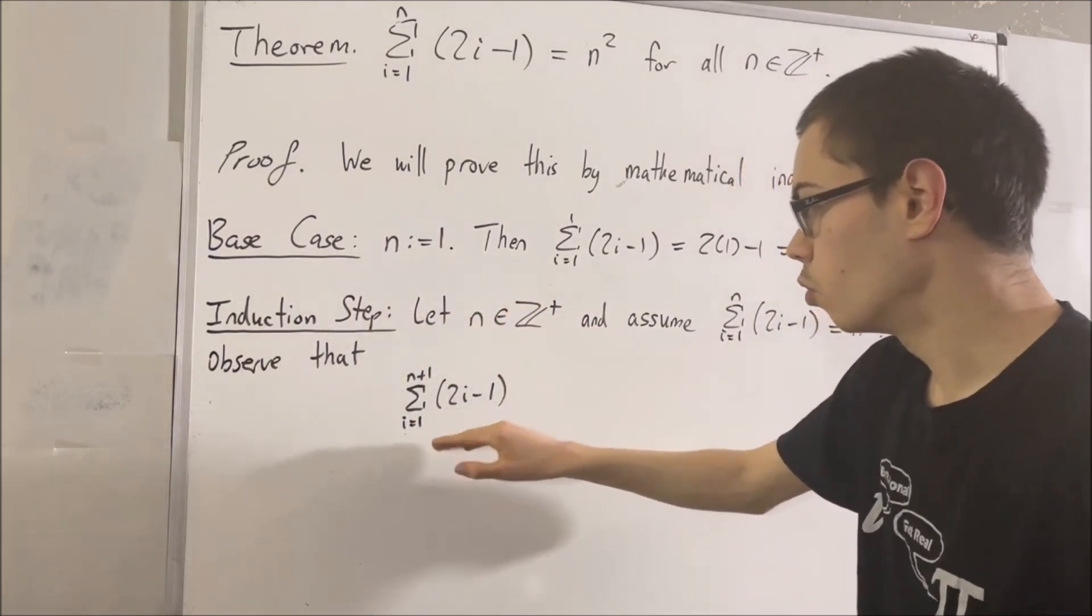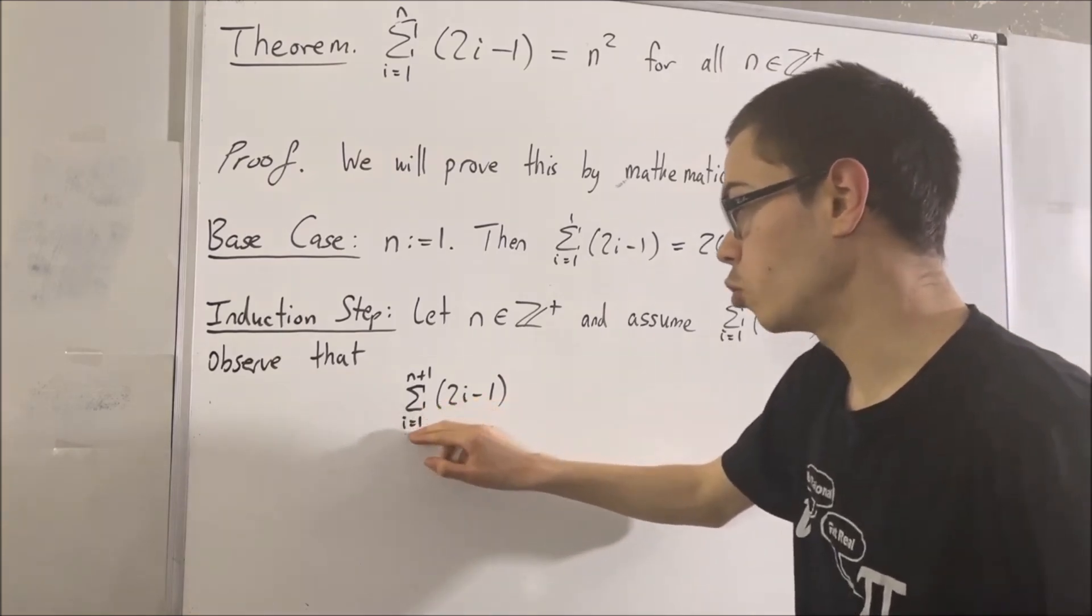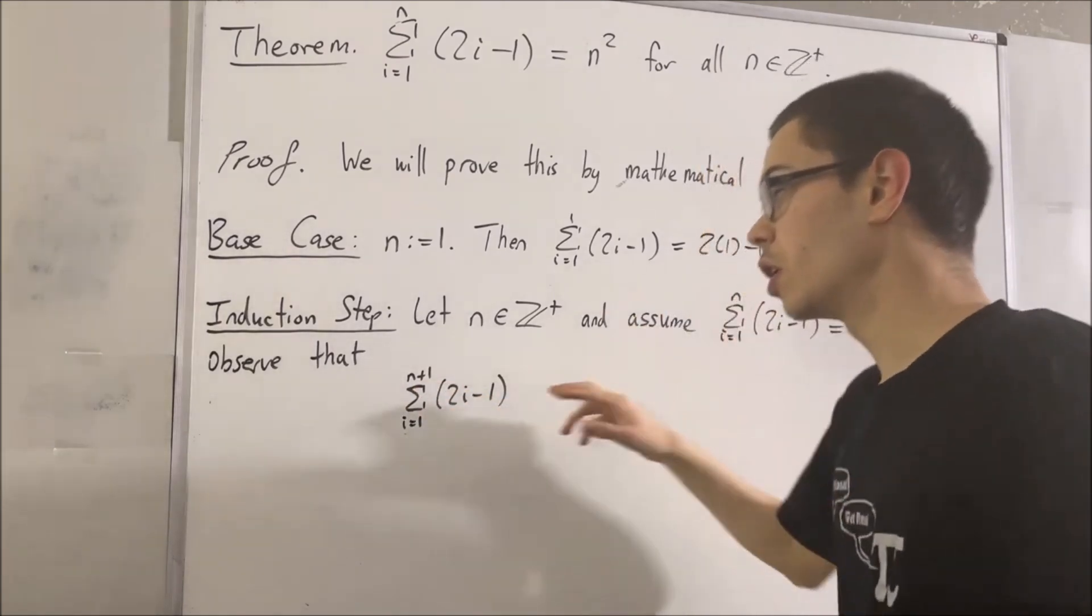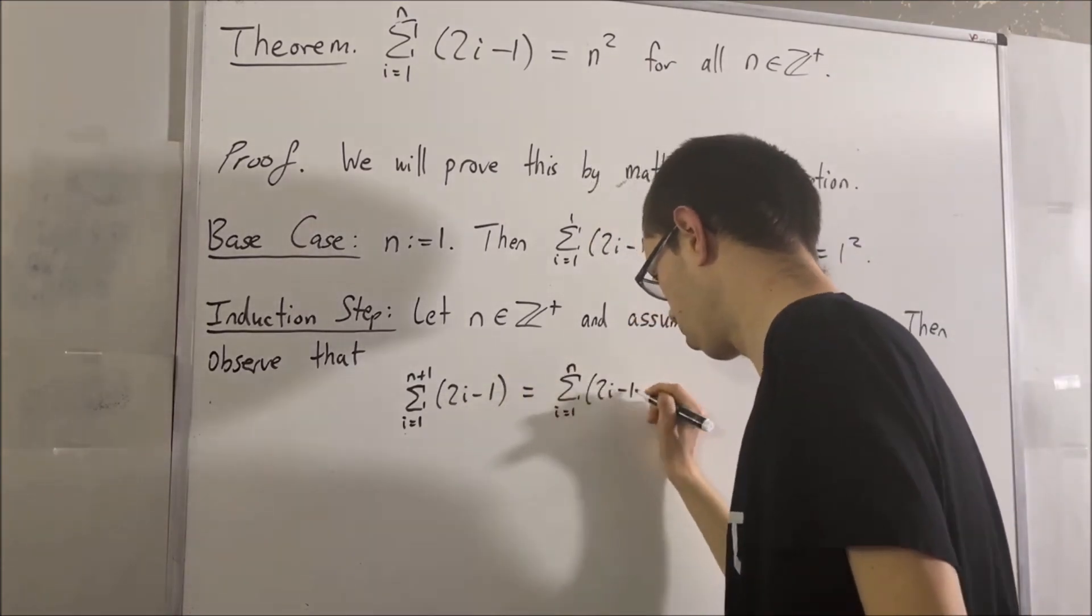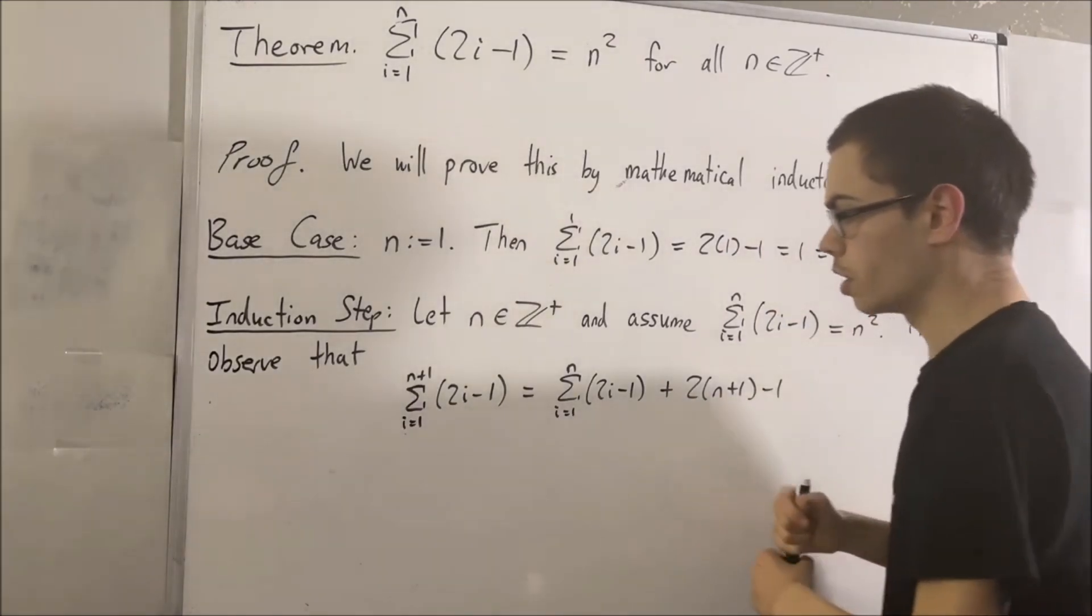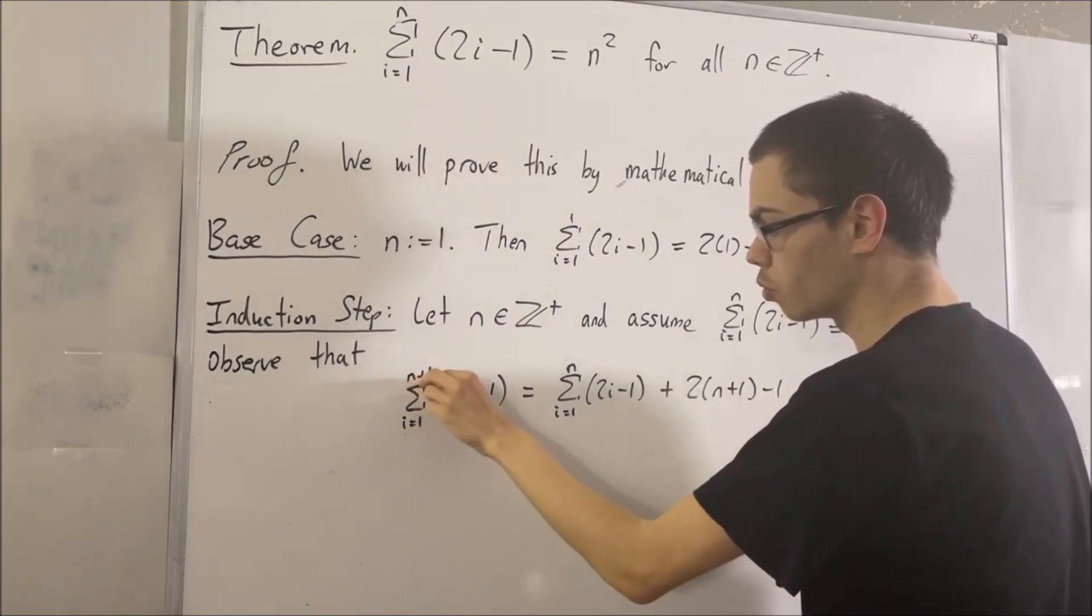That is, we can rewrite this sum as the sum from i equals 1 to n of 2i minus 1 plus 2 times n plus 1 minus 1. Right? So really, all we did here was we rewrote the sum. Instead of being from i equals 1 to n plus 1, well, we're going to decrease n plus 1 to n.